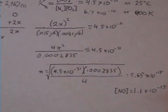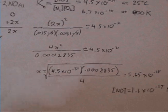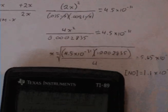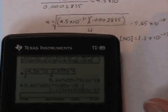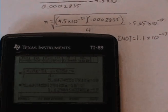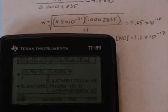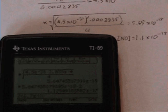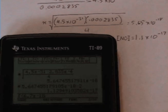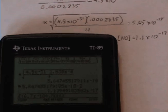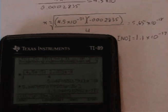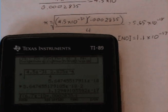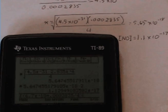And so instead of this calculation there, what we're going to have is the square root of 6.7 times 10 to the negative 10th times 0.0002835—that's the product of our concentrations of the reactants—divided by 4.